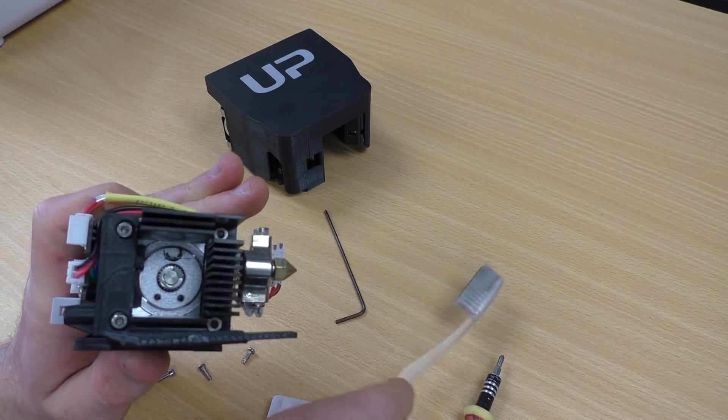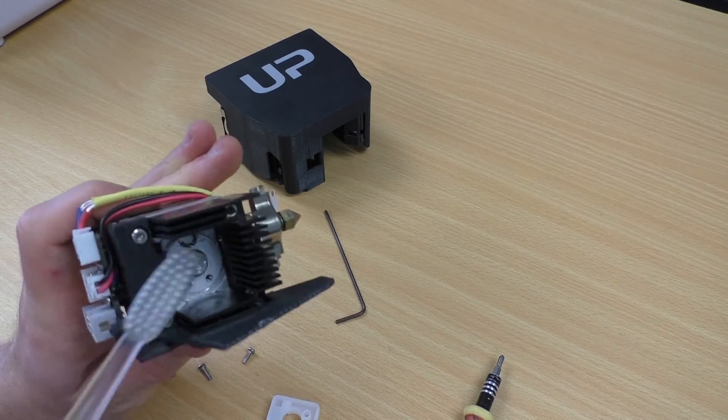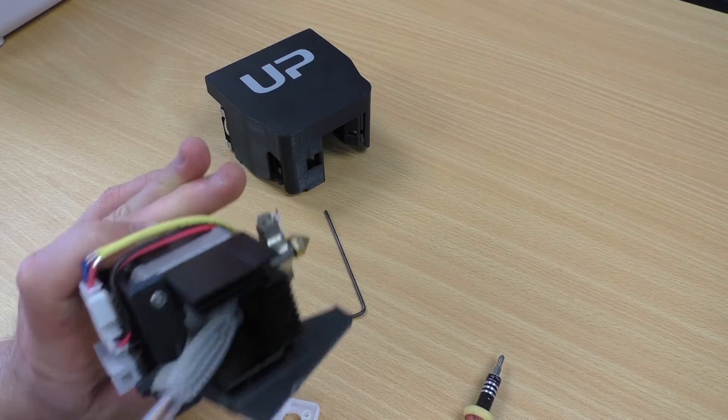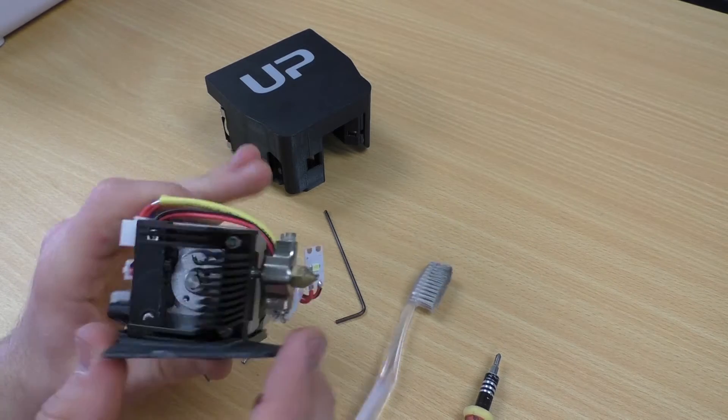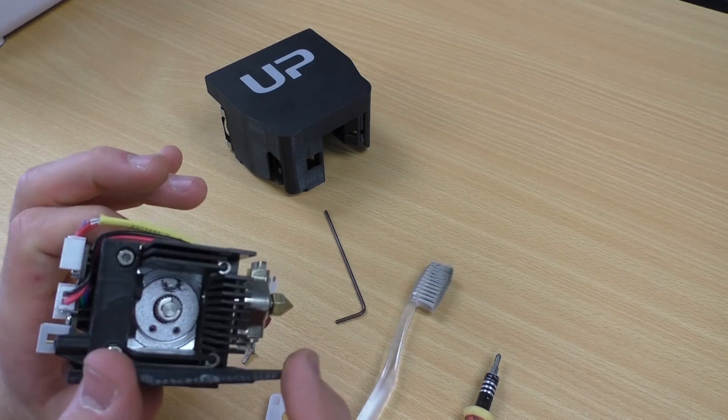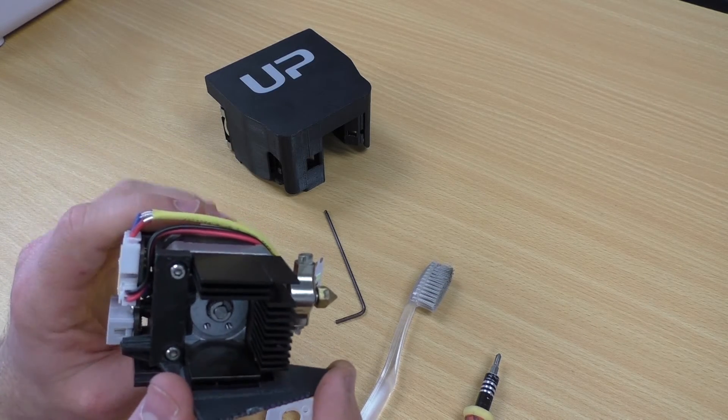But if you do find a little bit of plastic dust, just use your toothbrush. Just like cleaning your teeth, give it a good scrub and then blow any excess out. Once you've done that, drive gear is all clean, we can look at putting it back together.